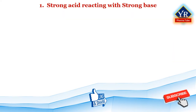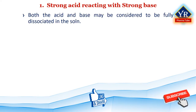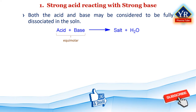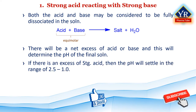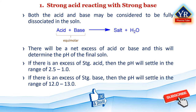Strong acid interacting with a strong base: in this situation, both the acid and base may be considered to be fully dissociated in solution. The acid and base will react to form a salt and water. If the acid and base are added in exactly equimolar quantities and both contain the same number of ionizable acidic or basic groupings, they will neutralize each other and the solution will have a neutral pH of 7. In all other situations there will be a net excess of acid or base. If there is an excess of strong acid, the pH will typically settle in the range of 1 to 2.5; conversely, if there is an excess of strong base, the pH will typically settle in the range of 12 to 13.